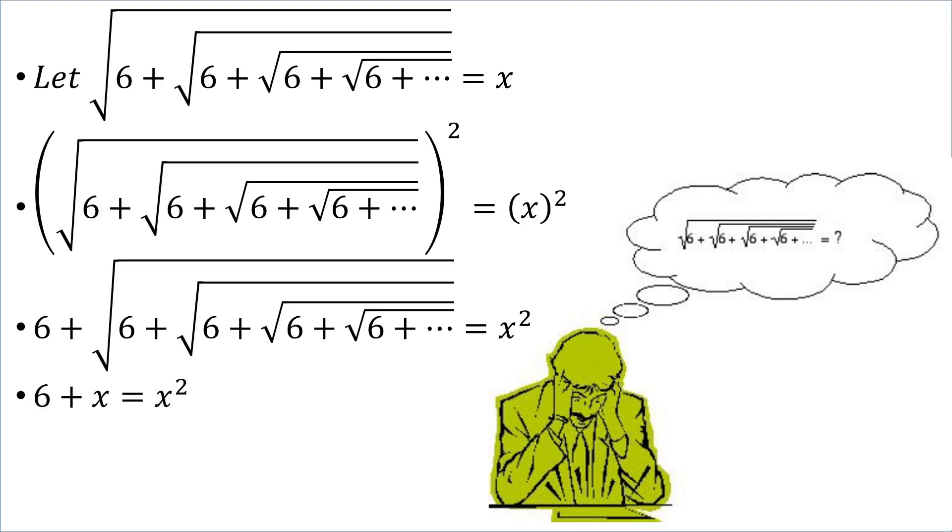So, we can replace that with x to have an equation 6 plus x is equal to x squared, which is a quadratic. So, let's transpose and have everything on one side set equal to 0. So, we'll have x squared minus x minus 6 is equal to 0, which we can then factorize. We can factorize that as x plus 2 times x minus 3.